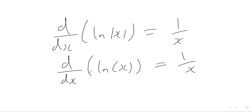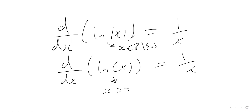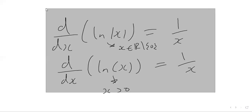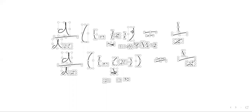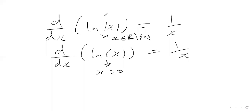This is actually the same result as when we differentiate just the natural logarithm of x without the modulus — we also get one over x. Of course, ln(x) is defined for x greater than zero, whereas ln|x| is defined for all real values of x apart from zero. You can't take a natural log of zero, and one over zero is not defined either. So the derivative of ln|x| is one over x, and likewise the derivative of ln(x) is also one over x.